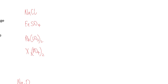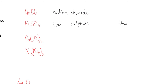So NaCl is sodium chloride — Na and chloride, changing chlorine to chloride. This next one is iron sulfate. However, we need to think about the iron because it's a transition metal. Sulfate is 2− and there's a one-to-one ratio, which means the iron must also have a 2+ charge. So this is iron(II) sulfate.